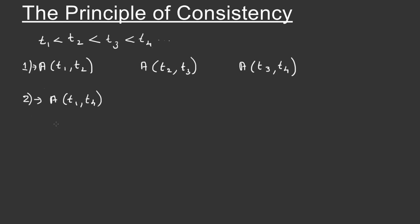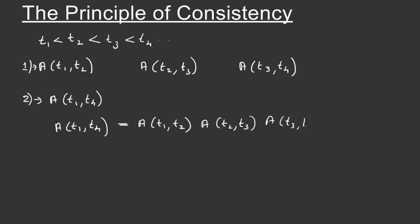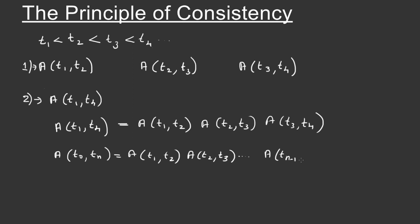The principle of consistency can be written as: a(T1, T4) must be equal to a(T1, T2) times a(T2, T3) times a(T3, T4). So, in general, a(T0, Tn) must be equal to a(T1, T2) times a(T2, T3), and so on, up to a(Tn-1, Tn).